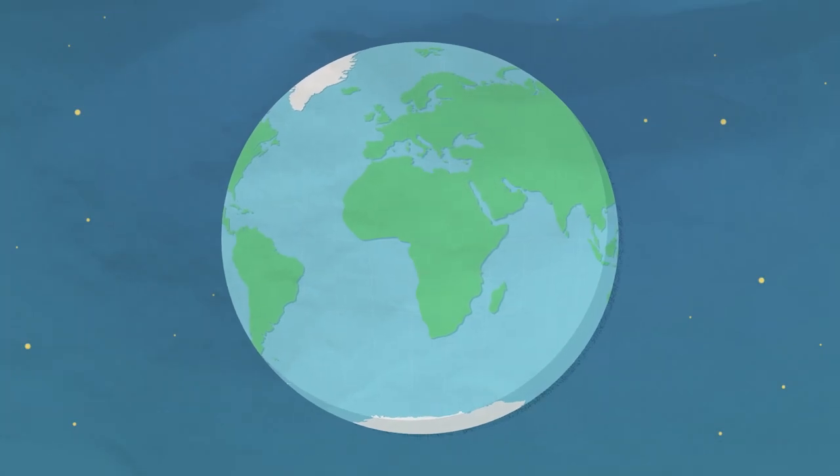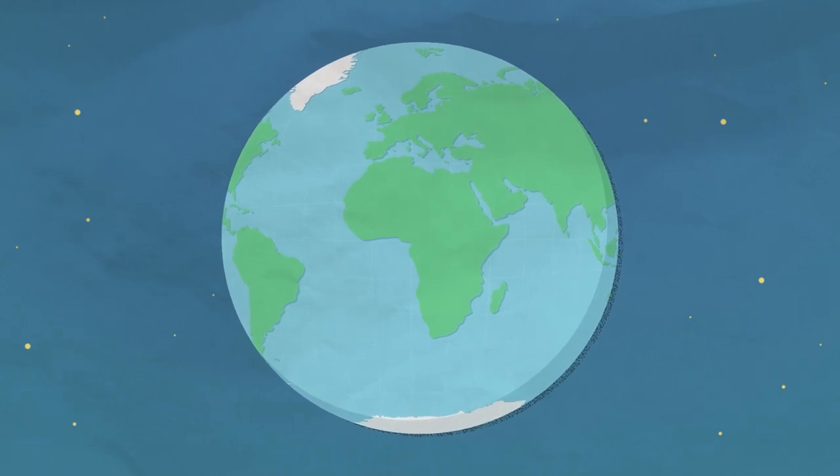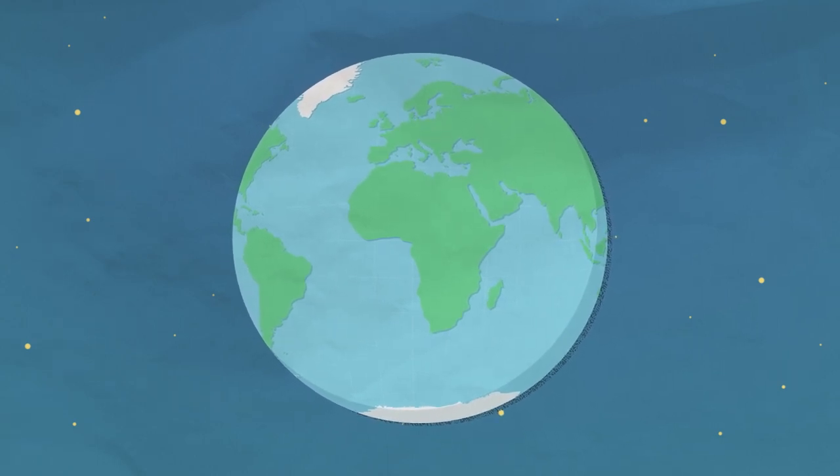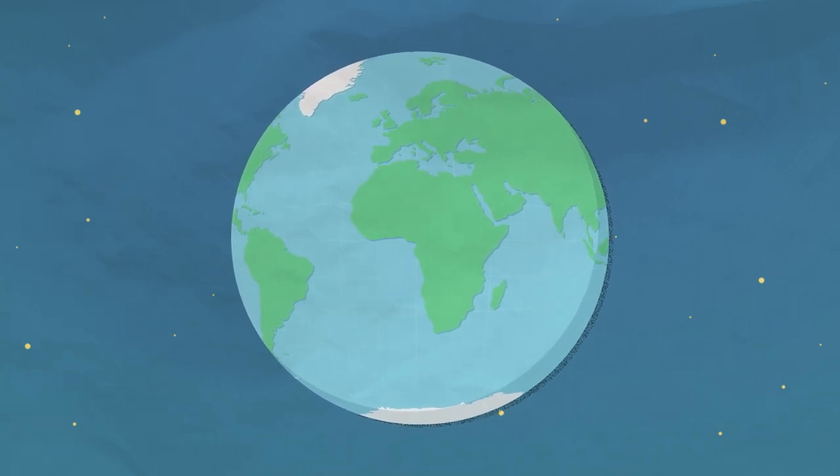Our planet acts like a living organism, dynamically moving and changing in both the short and long term. We've come a long way since we first called the Earth Round. Now we can scientifically say, it's round...ish.